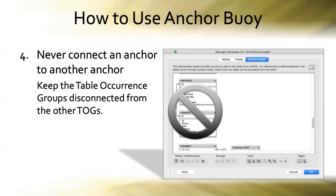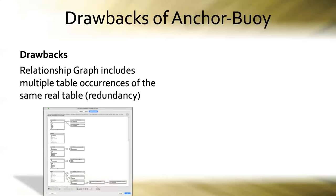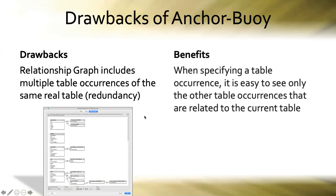Are there any drawbacks to the Anchor Buoy method? Yes, potentially. The relationship graph of necessity will include multiple table occurrences of the same real table — a seeming redundancy. You'll have a table occurrence for each real table down the left-hand side as anchors, but then you'll also have buoys which are occurrences of some of those same tables to create your relationships.